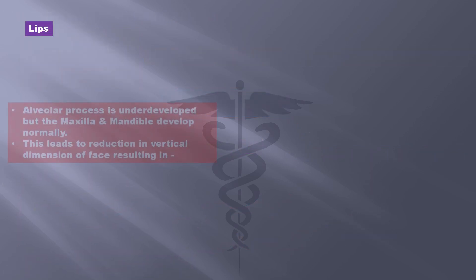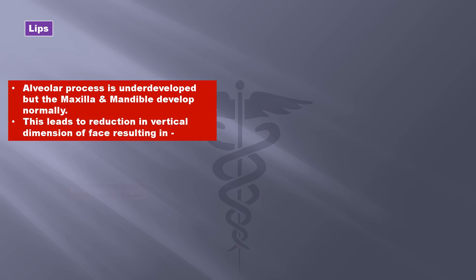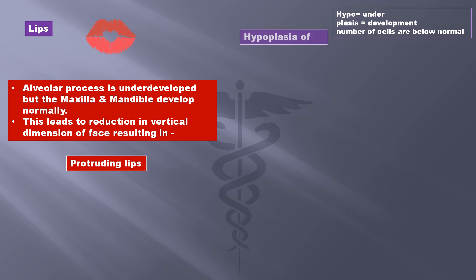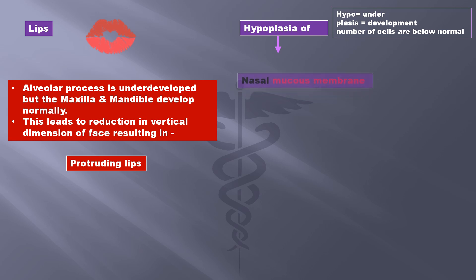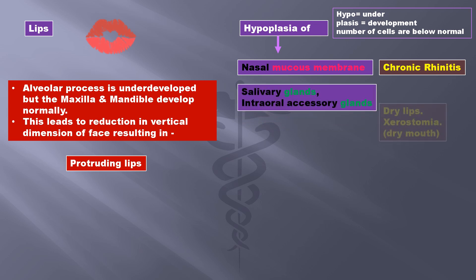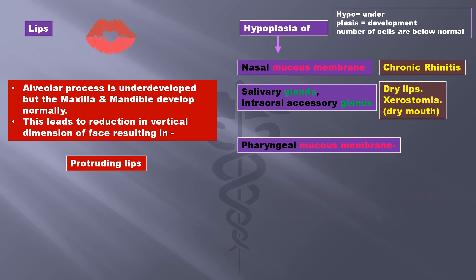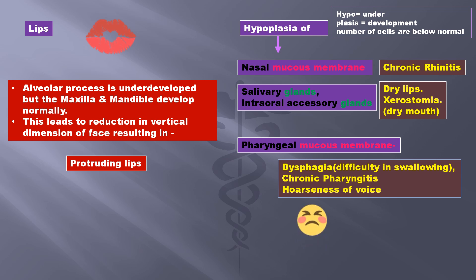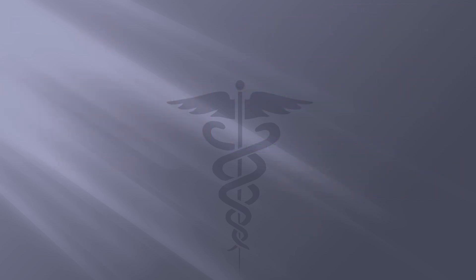The alveolar process is underdeveloped but the maxilla and mandible develop normally. This leads to reduction in the vertical dimension of the face resulting in protruding lips. There is hypoplasia of the nasal mucous membrane which leads to chronic rhinitis. Reduction in the number of cells of salivary glands and accessory glands in the mouth cause dry lips and dry mouth — dry mouth is called xerostomia. Hypoplasia of the pharyngeal mucous membrane causes dysphagia, that is difficulty in swallowing, and there can be chronic pharyngitis and hoarseness of voice. The bridge of the nose is depressed or sunken, giving the appearance of a saddle nose, and the ears may be deformed. There is frontal bossing, that is the forehead is prominent.